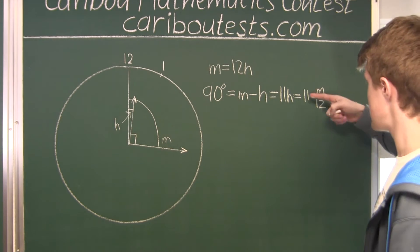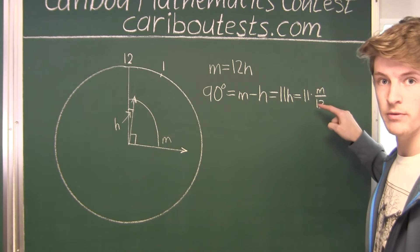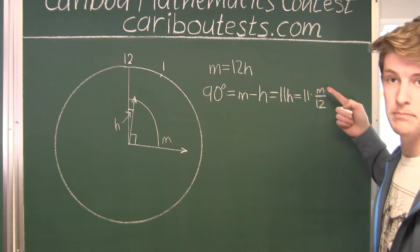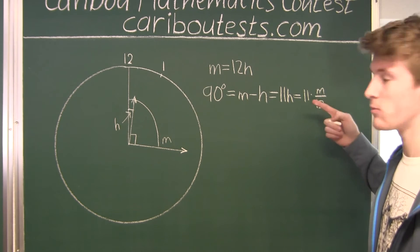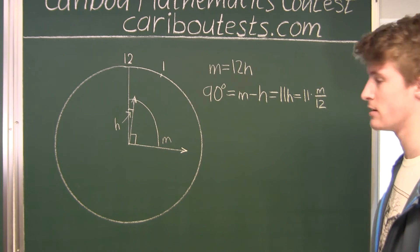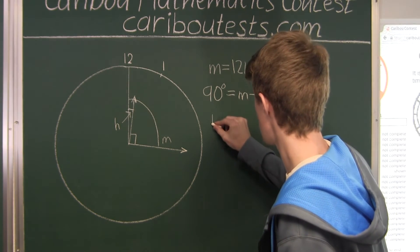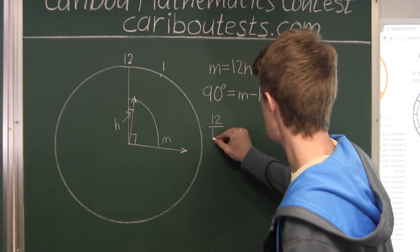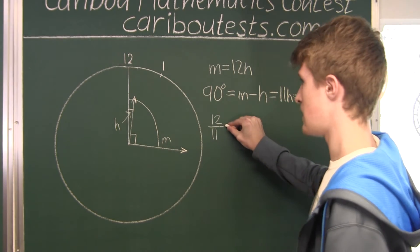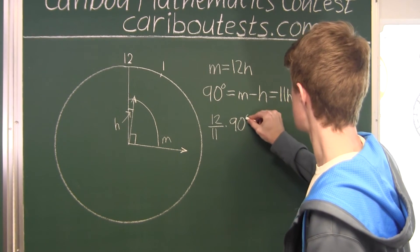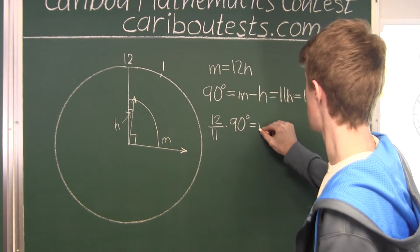Now we must multiply both sides. Since we have eleven over twelve times M, we must multiply by twelve over eleven to isolate M. Therefore we will have twelve over eleven times ninety degrees, which equals M.